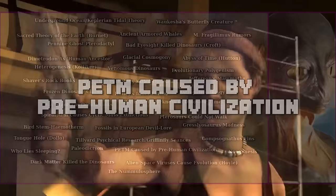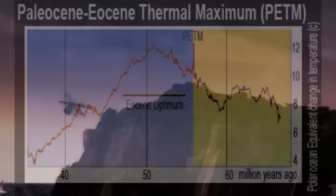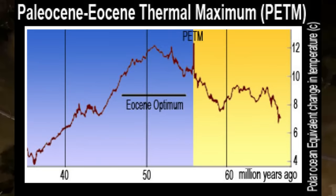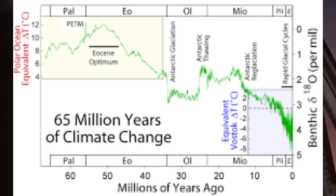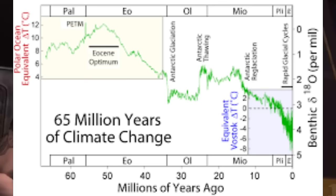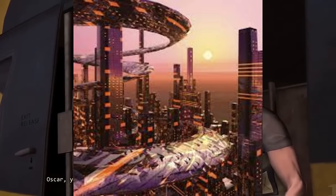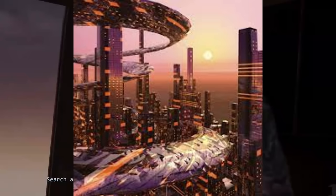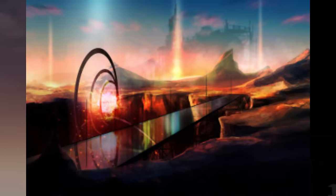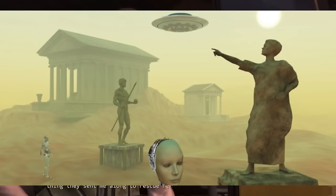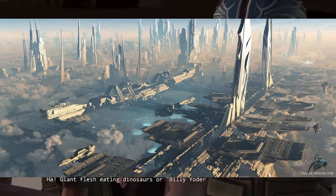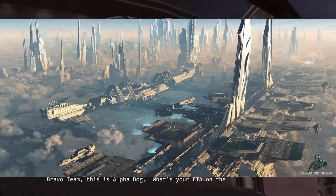The Paleocene-Eocene Thermal Maximum, or PETM, was a period occurring around 56 million years ago known for a significant global warming event, with rapid release of greenhouse gases leading to warming, ocean acidification, and changes in ecosystems. Some theories, such as the Silurian Hypothesis, suggest the possibility of ancient pre-human civilizations existing in deep time, even during periods like the PETM. Proponents suggest the sudden increase in fossil carbon during the PETM could potentially be attributed to carbon fuel use by an ancient civilization, similar to how humans use fossil fuels today. However, finding direct evidence such as technological artifacts is unlikely due to the rarity of fossilization, and right now there is no strong evidence to support this claim.